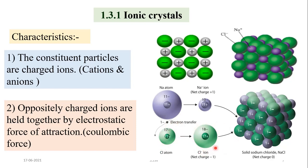The crystal as a whole is neutral. The positive and negatively charged ions are alternately arranged in the crystal lattice, so the overall charge on the crystal is zero. The same number of cations and anions are present, and these oppositely charged ions are held together by electrostatic or coulombic force.